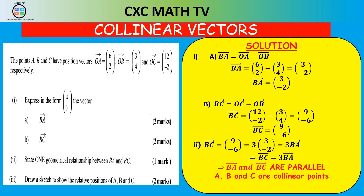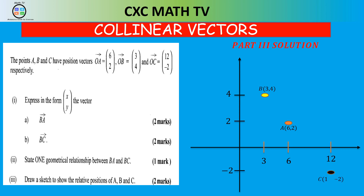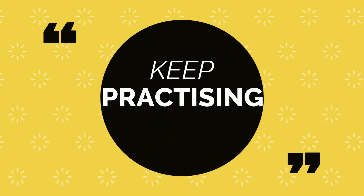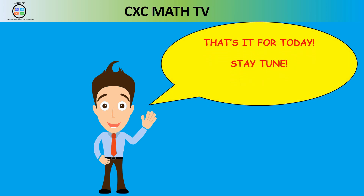Plotting points A(6,2), B(3,4) and C(12,−2) on a graph and drawing a straight line confirms all three points are collinear. The best way to understand these concepts is to practice, practice and practice. Keep practicing and stay tuned for more — take care.